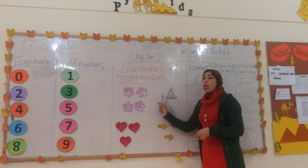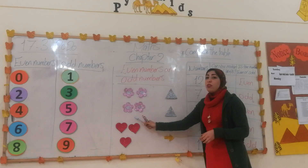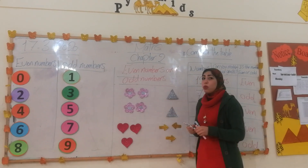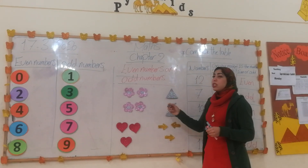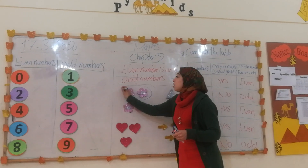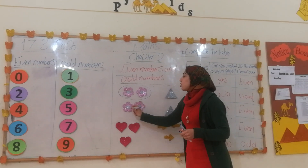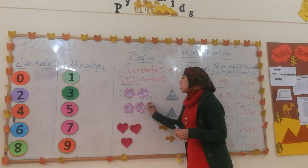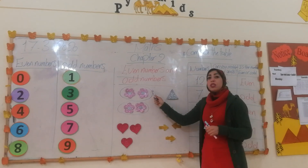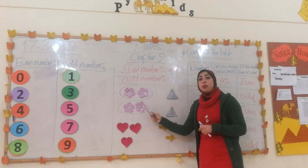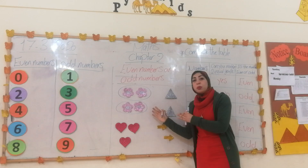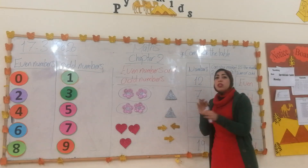Let's see. If we have a set of flowers and I want to make two equal groups from these flowers — we have here the first group and the second group. The first group has two flowers and the second group has two flowers. We have two equal groups without remainder.